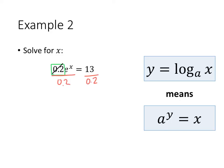When I do that, the point 2s on the left divide out, I get e to the x. 13 divided by point 2, I can work that out, that turns out to be 65.